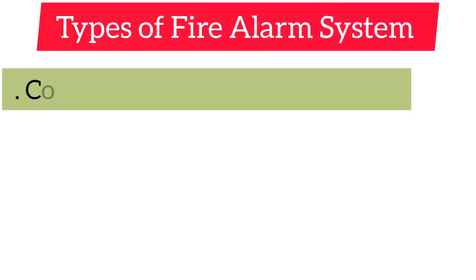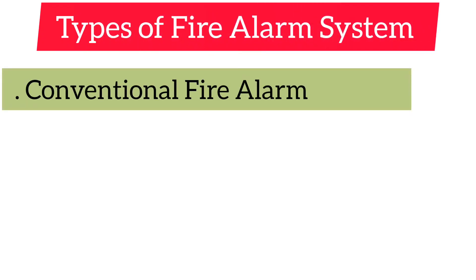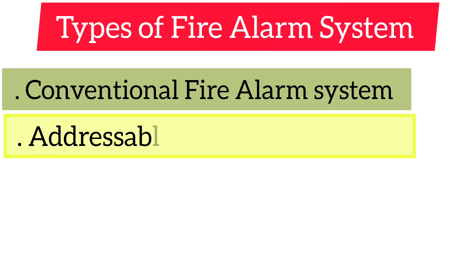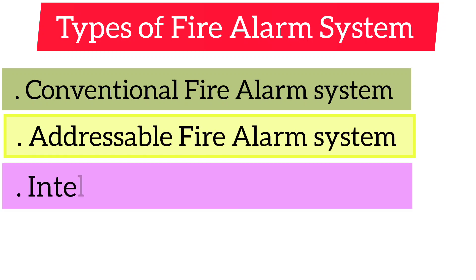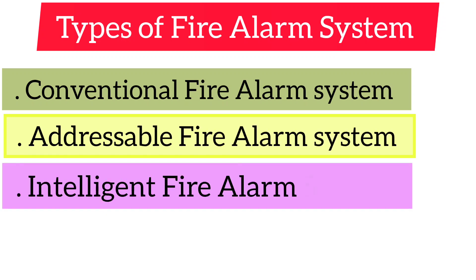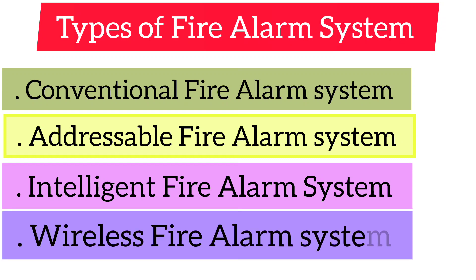Types of fire alarm system: 1. Conventional fire alarm system. 2. Addressable fire alarm system. 3. Intelligent fire alarm system. 4. Wireless fire alarm system.